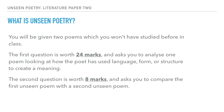Unseen Poetry means you will be given two poems which you won't have studied before in class — your teacher won't know what the poems are until you've finished the exam. You will be answering two questions. The first question is worth 24 marks, asking you to analyse one poem and how the poet has used language, form, or structure to create a meaning specified in the question. Your second question is worth eight marks, asking you to compare the two unseen poems. It's the shortest question and you shouldn't be writing more than eight to ten lines, regardless of the grade you're aiming for — it's about the quality of comparisons, not length.